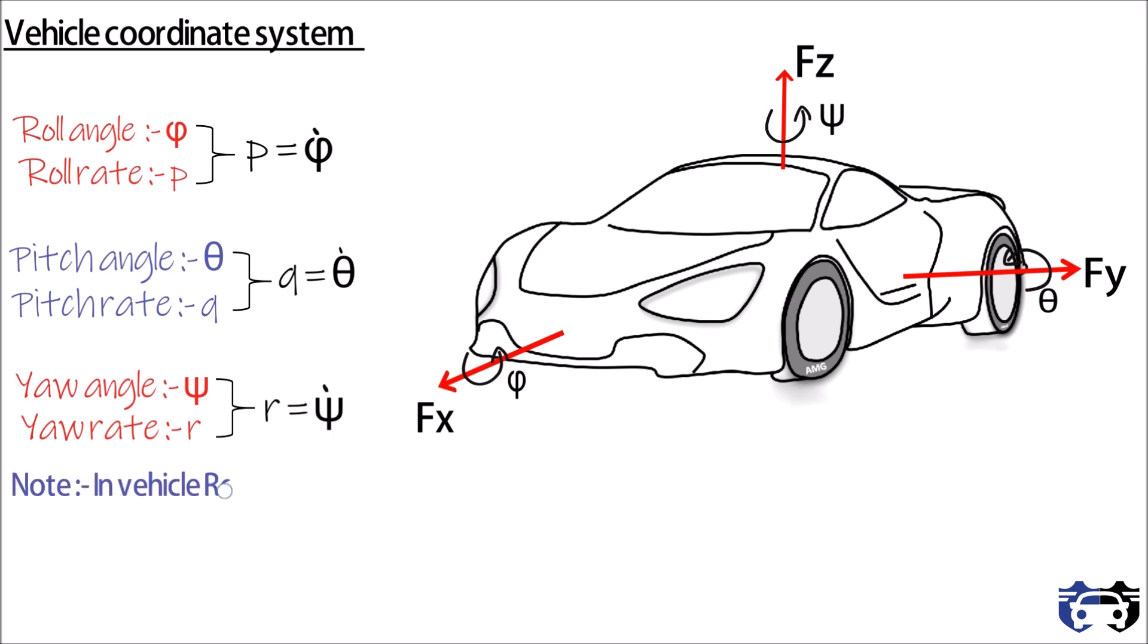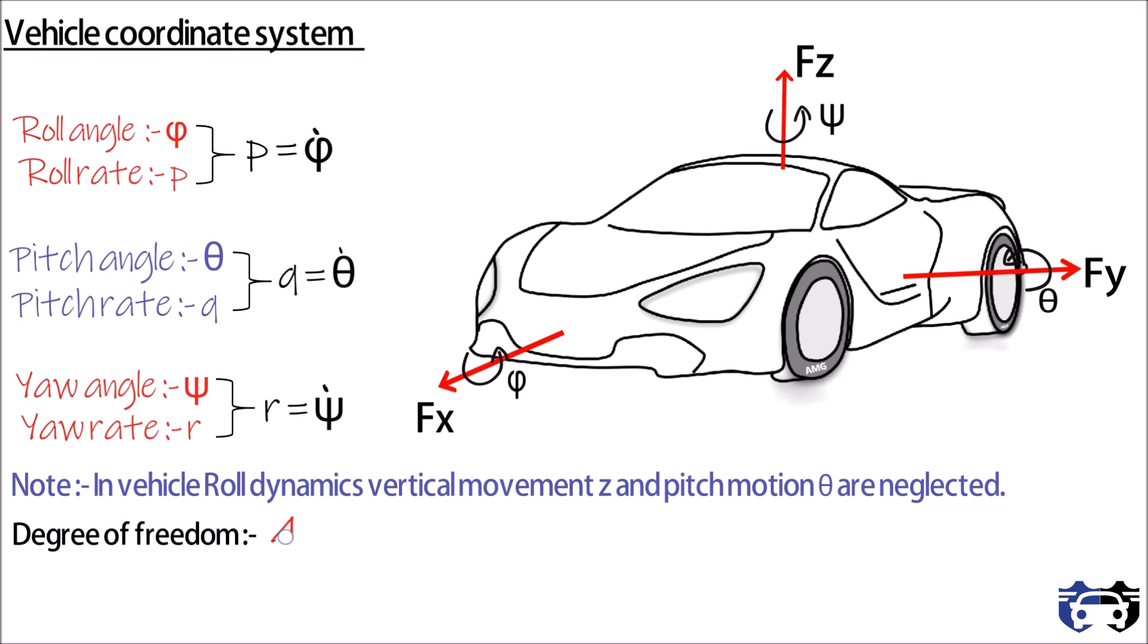Note: in vehicle roll dynamics, vertical movement z and pitch motion theta are neglected. This means that the degree of freedom of this dynamic model is 4—two for x-y direction translational and two for x-z direction rotational. So we have a 4 degree of freedom model.